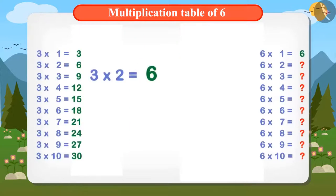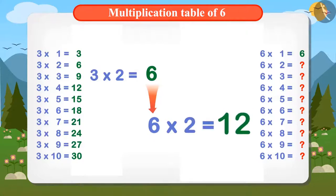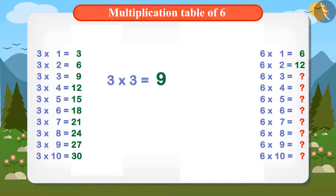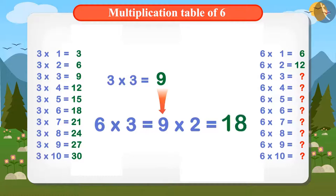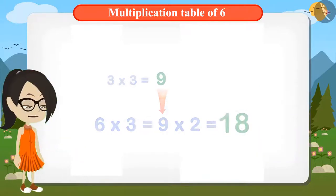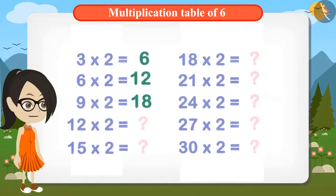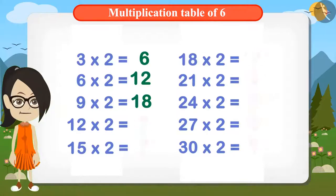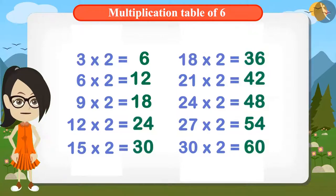Three times one is three, so six times one is three times two, which is six. Three times two is six, so six times two is six times two, which is twelve. Three times three is nine, so six times three is nine times two, which is eighteen. Now I can find out the complete table of six in this manner. You can also find out the multiplication table of six like this.